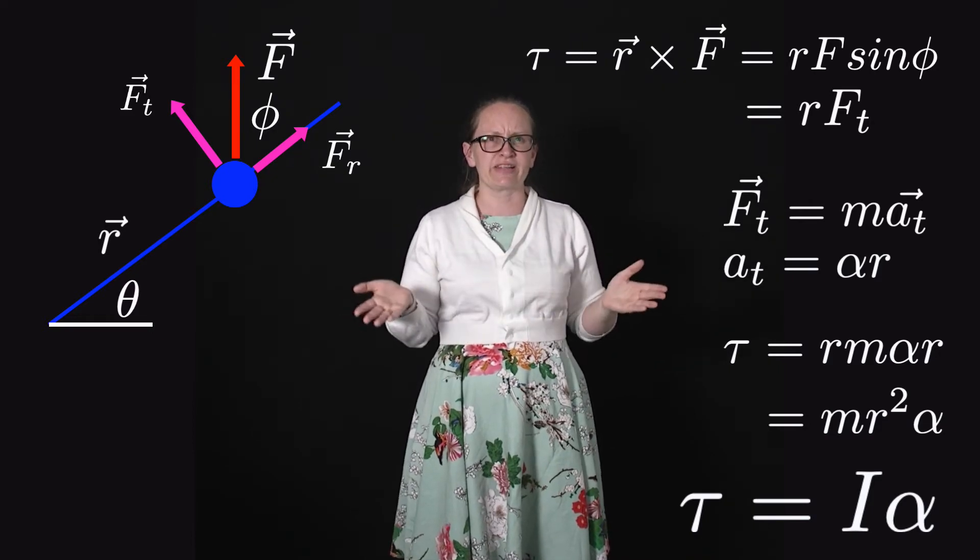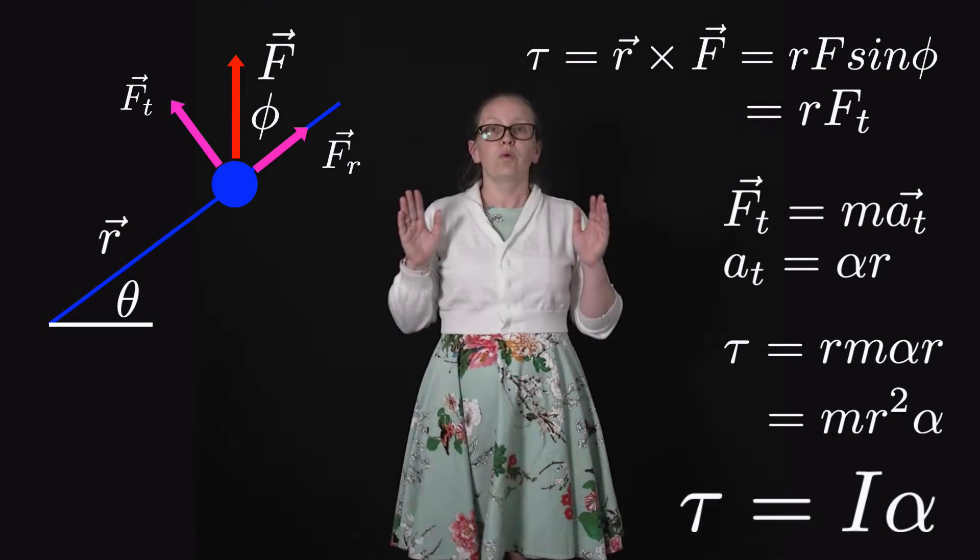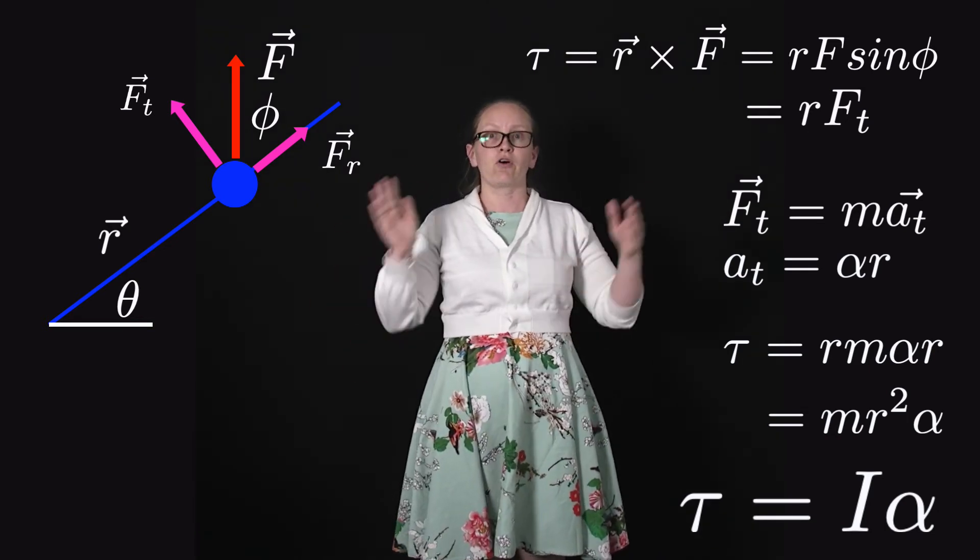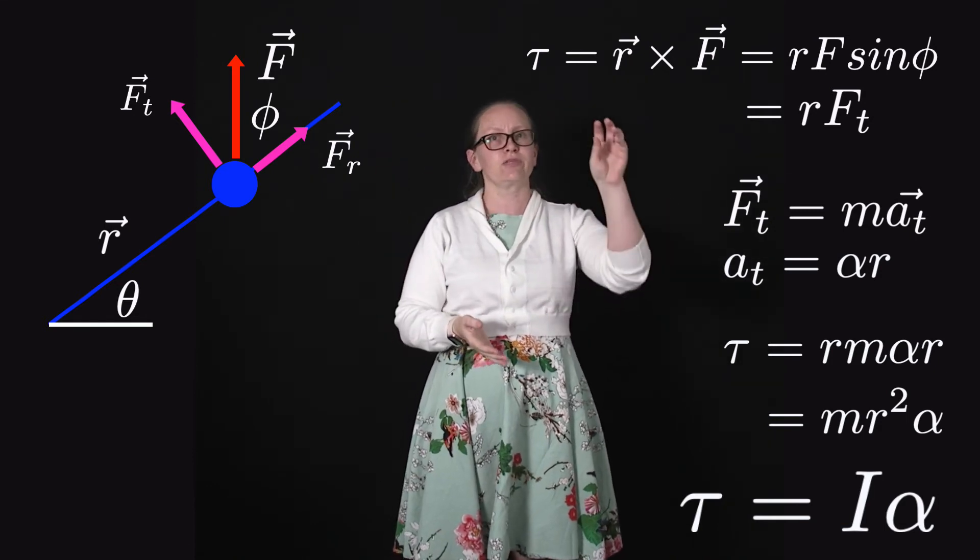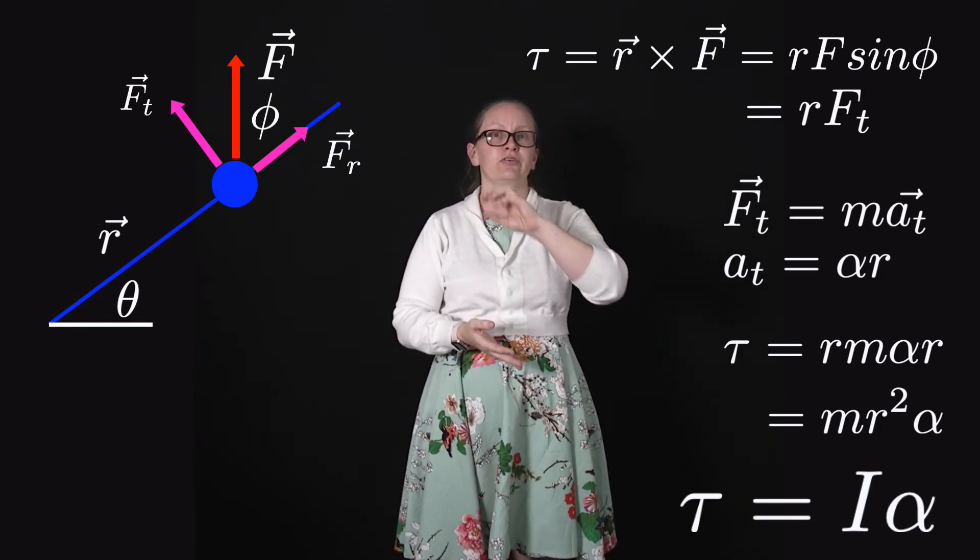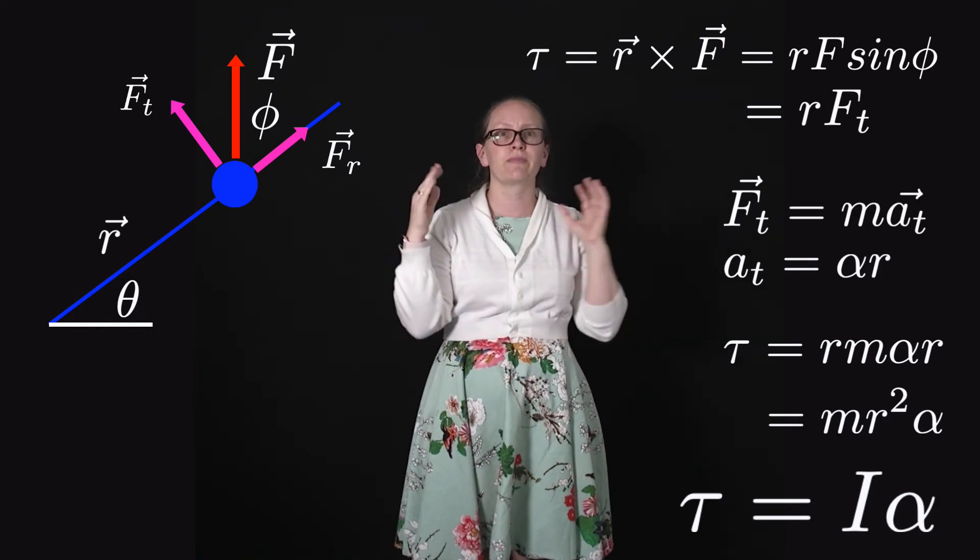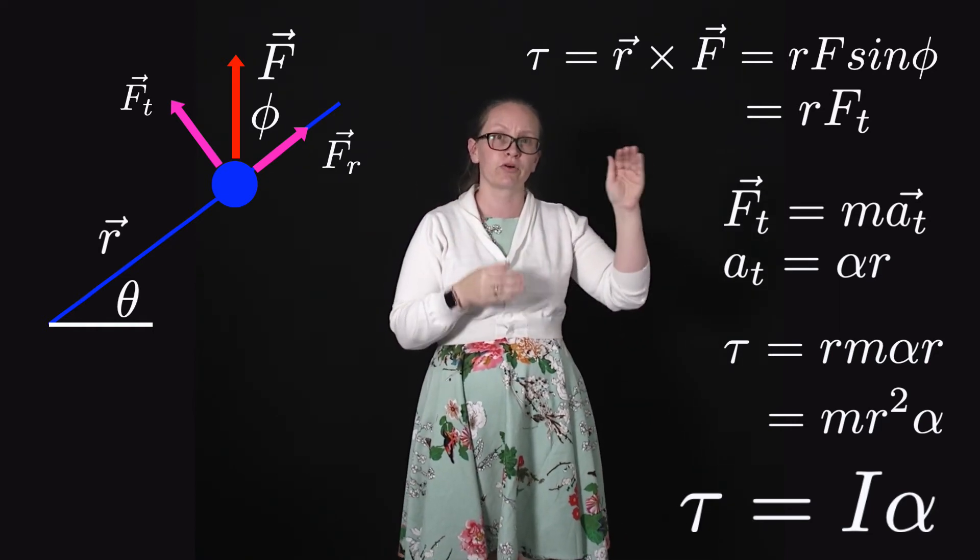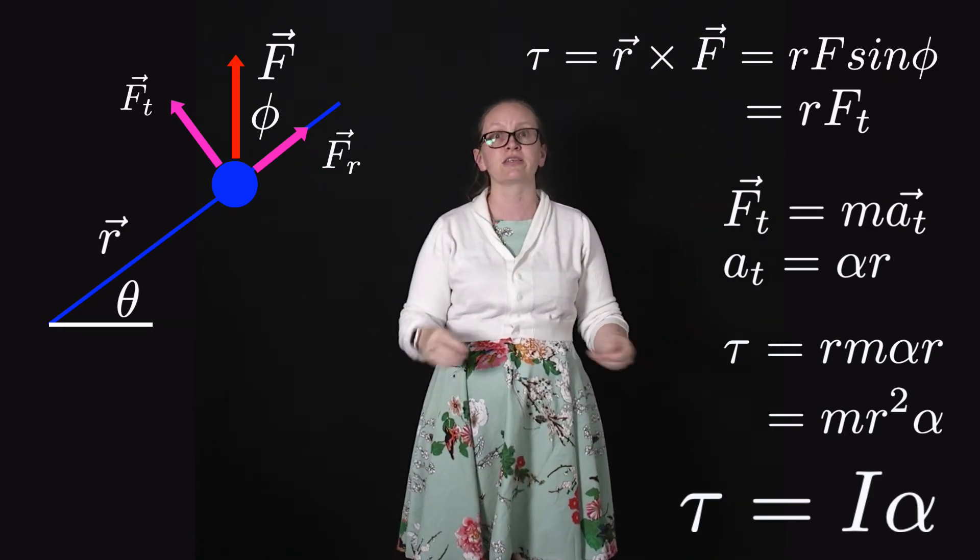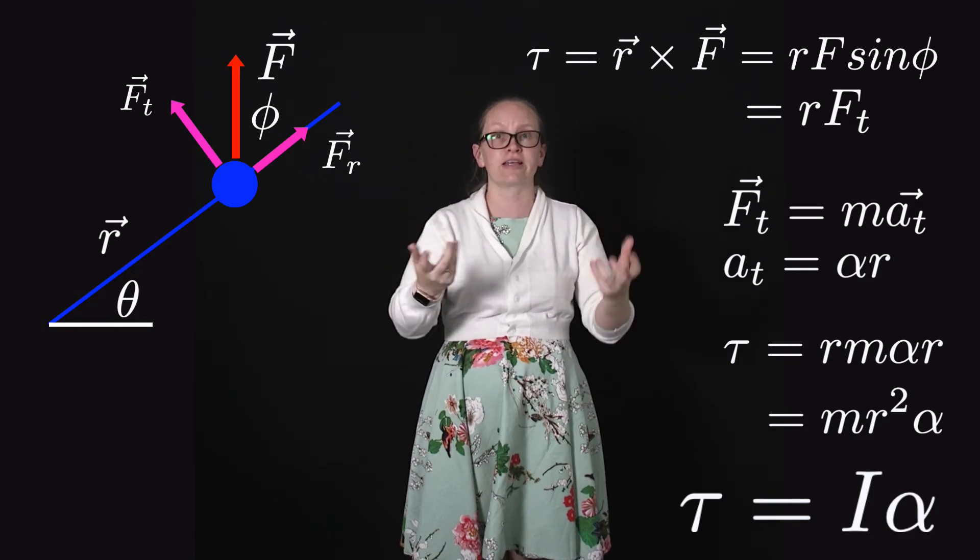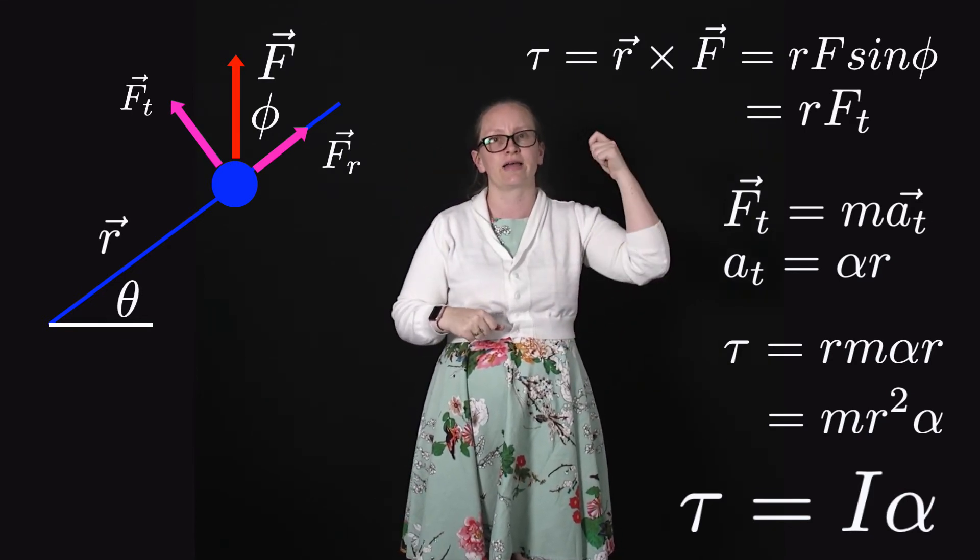But is this generalizable or have we just shown it for the simplest case? Well, we can actually extrapolate this for all cases because whenever we're considering a continuous body, we just break it up into lots of little components and add all those components together. So by showing it for one small component, we can actually extrapolate this to whole continuous bodies. So the generalizable formula is that the net torque is equal to I times alpha.